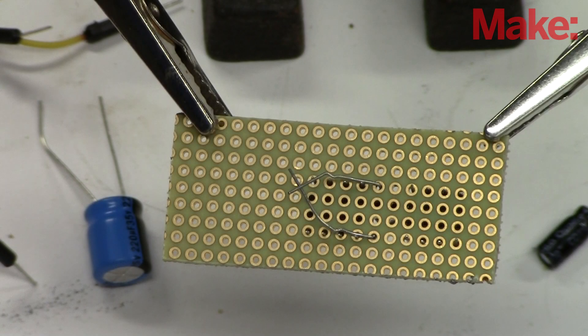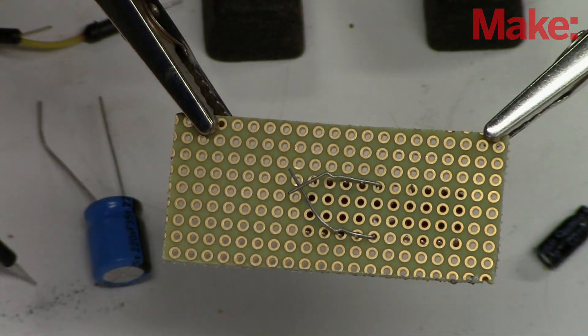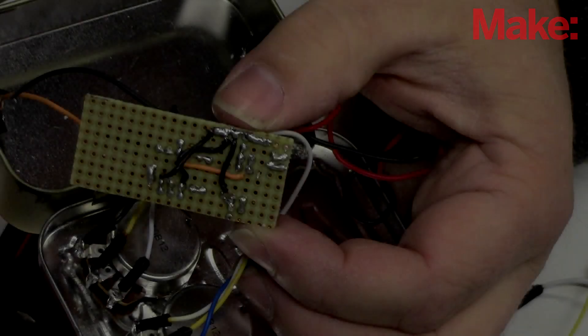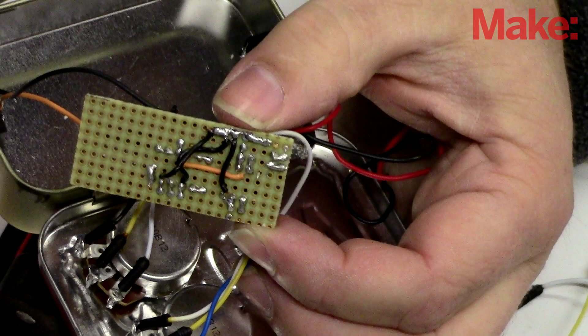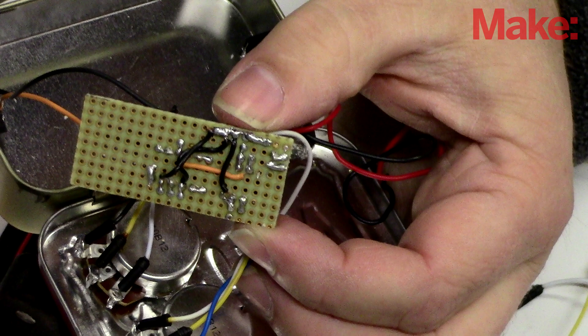Then I begin to solder it all together. Here I want to do a nice neat job. In the end, you should have a tight compact package with very short leads and a good grounding scheme in order to reduce the noise from the circuit as much as possible.